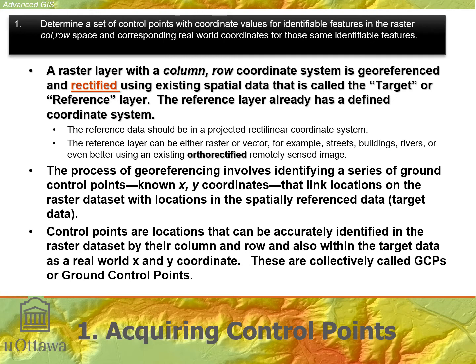Let's look at the first step in more detail: the act of getting control points to geo-reference a raster. In order to geo-reference a raster, we need column and row coordinates and real world coordinates to correspond to each other for some identifiable thing in the real world. We have two different layers to work with. We have a target or reference layer — that's the image — which could be another map of roads or a thematic map that's already in the real world coordinate system. We call that the reference layer, and it has a defined coordinate system.